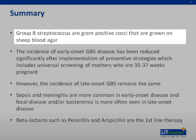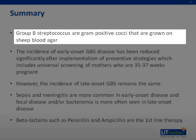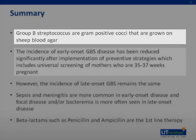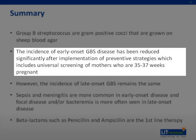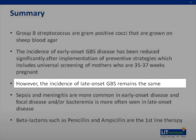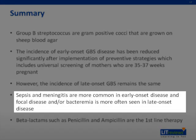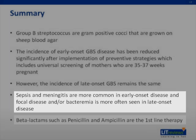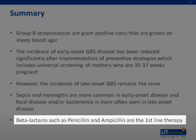In summary, group B streptococci are gram-positive cocci grown on sheep blood agar. The incidence of early onset GBS disease has been reduced significantly after implementation of preventive strategies, which include universal screening of mothers at 35 to 37 weeks of pregnancy. However, the incidence of late onset GBS remains the same. Sepsis and meningitis are more common in early onset disease, while focal disease and bacteremia are more often seen in late onset disease. Beta-lactams such as penicillin and ampicillin are the first-line therapy.